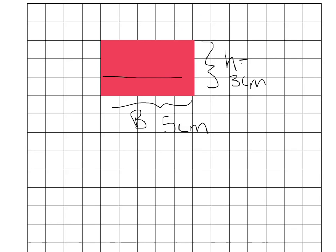And we can actually count that by counting those 15 squares: 1, 2, 3, 4, 5, 6, 7, 8, 9, 10, 11, 12, 13, 14, 15.